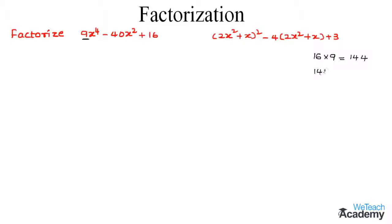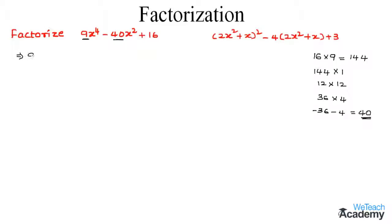The factors of 144 are 144 into 1, 12 into 12, and 36 into 4. Here, minus 36 minus 4 would be 40, which is the coefficient of the middle term. So we can write this expression as 9x power 4 minus 36x square minus 4x square plus 16.